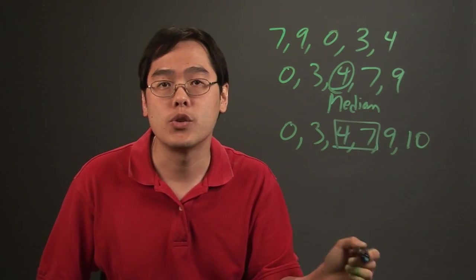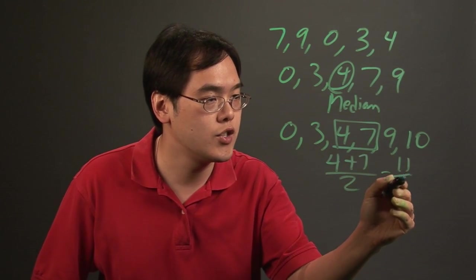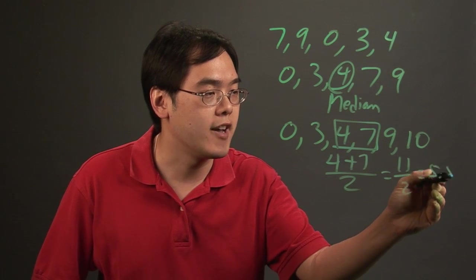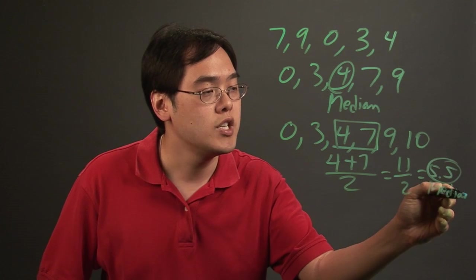So you're taking the 4, adding the 7, and dividing by 2. That's 11 over 2 which ends up being 5.5, and that number is your median.